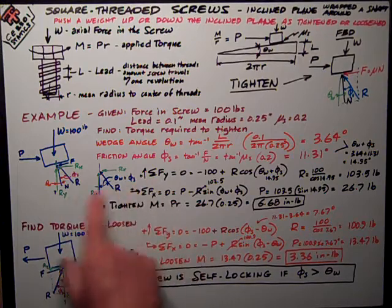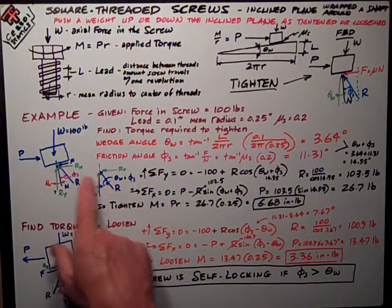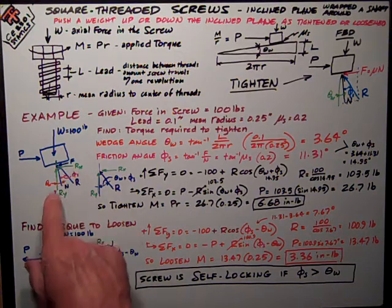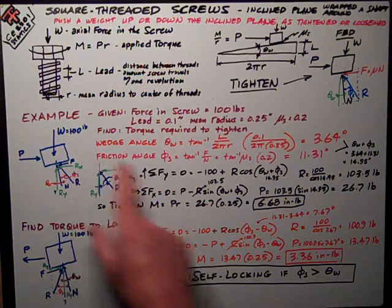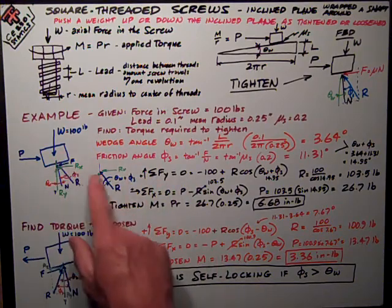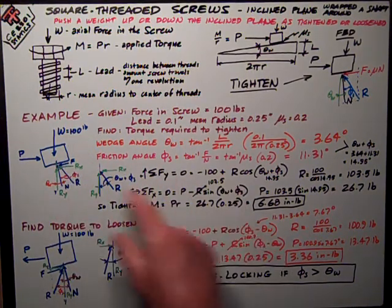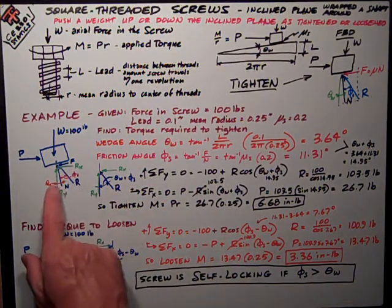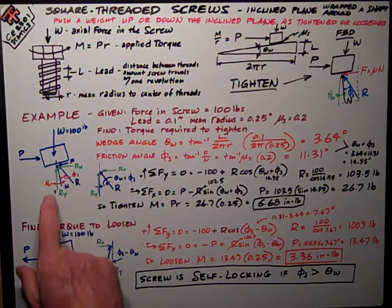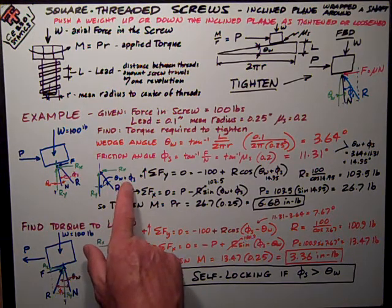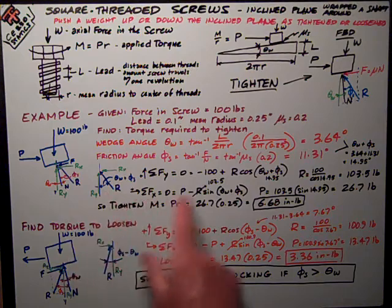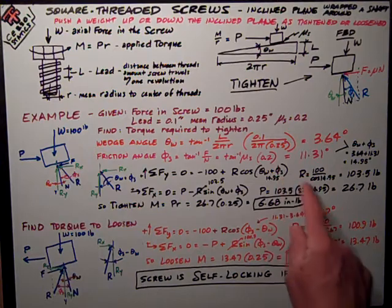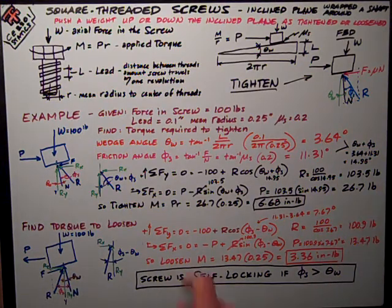If I do sum of forces in the Y, I've resolved my R resultant force in blue into those two components, R_x and R_y. So sum of forces in the Y, one thing I have in the Y is the 100 pounds axial force in the screw acting down, so it's negative, plus R cosine of this angle. The angle with the vertical is the sum of θ_W plus φ_s. So the cosine of that is the vertical part. I rearrange and solve for R is equal to 103.5 pounds.